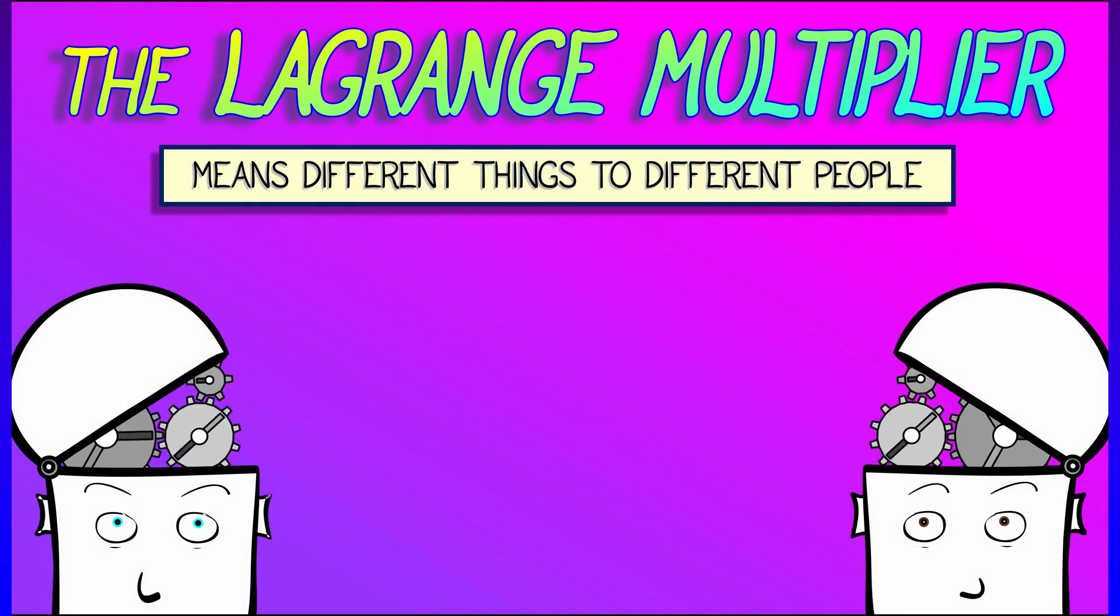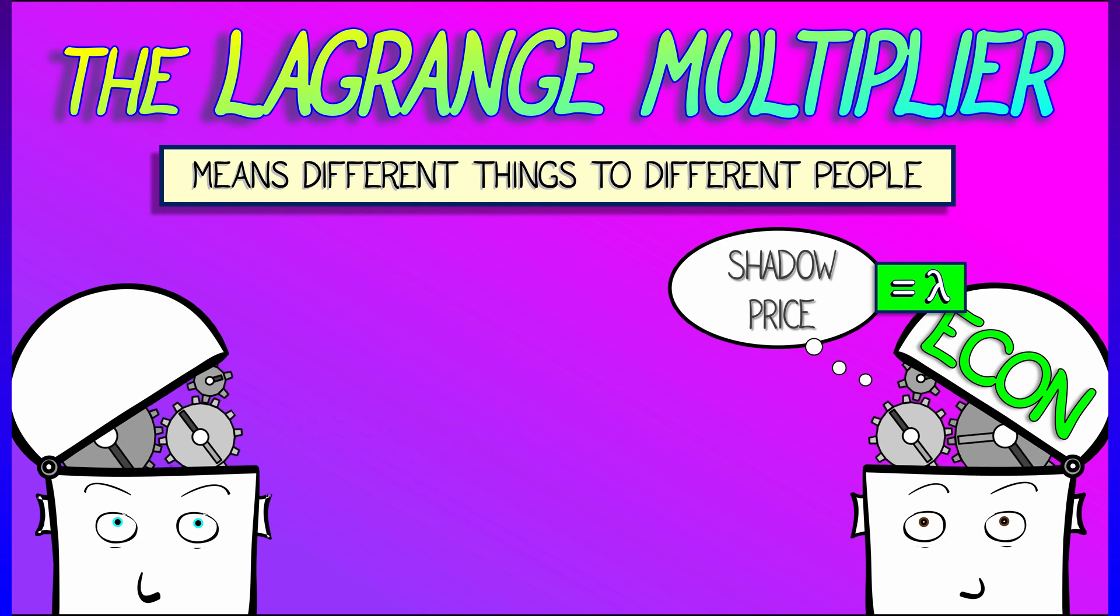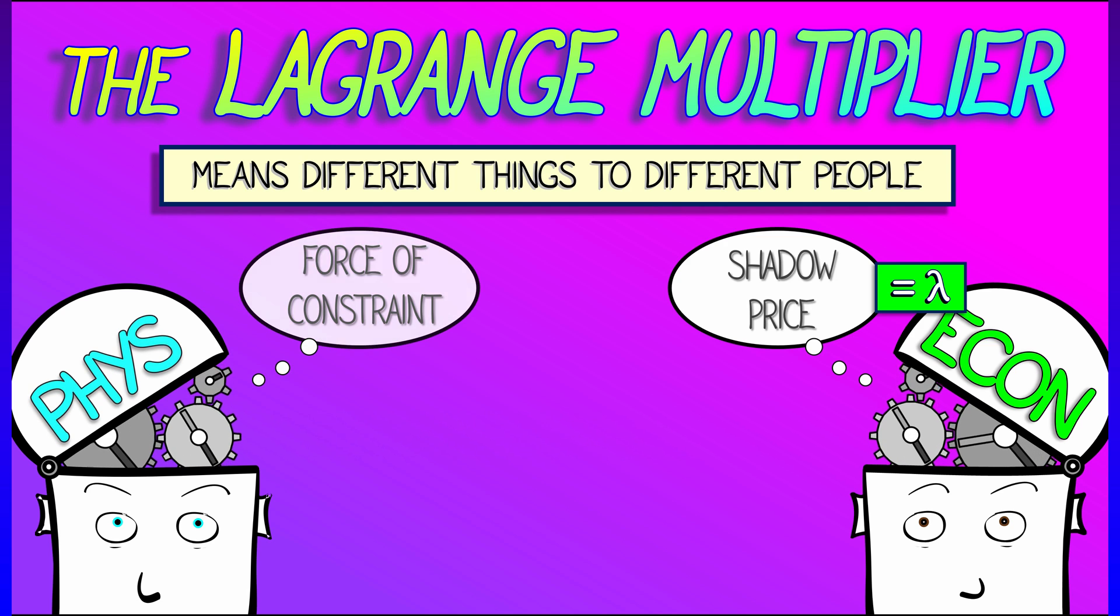The Lagrange multiplier does have real meaning, but it means different things to different people. Maybe you're an economist, you might think of a Lagrange multiplier as a shadow price. It shows up in that context. Maybe you're a physicist, you might think of a Lagrange multiplier in terms of a force of constraint where it shows up.